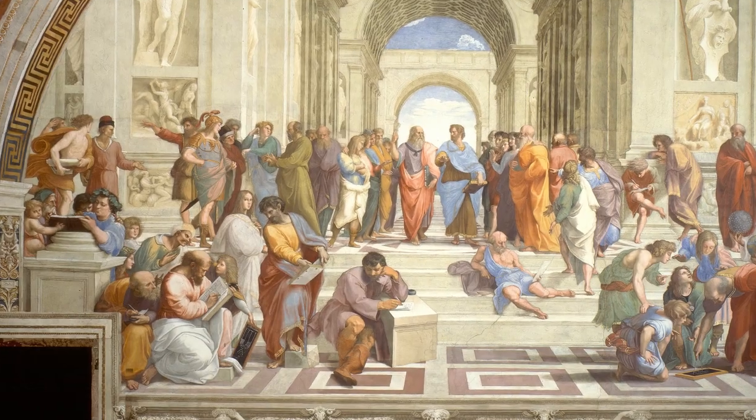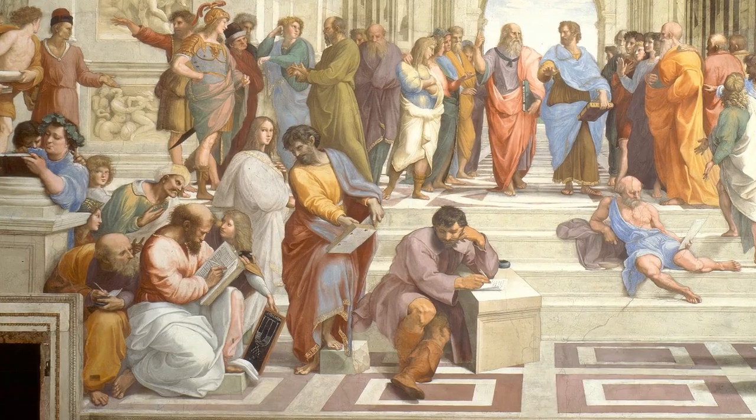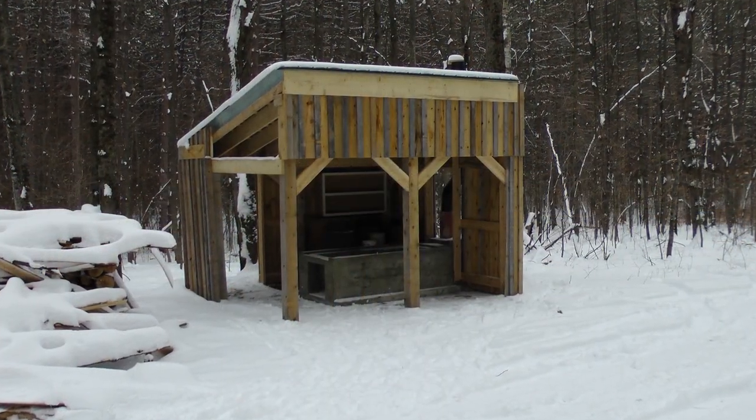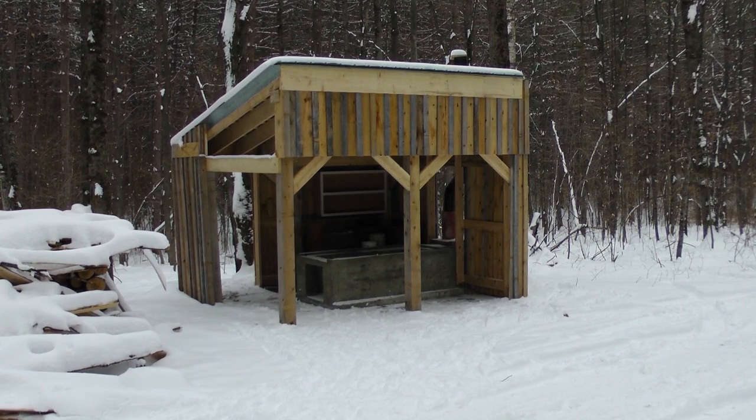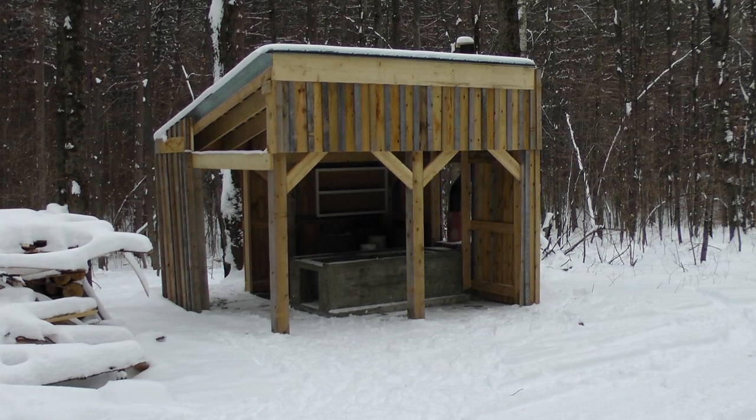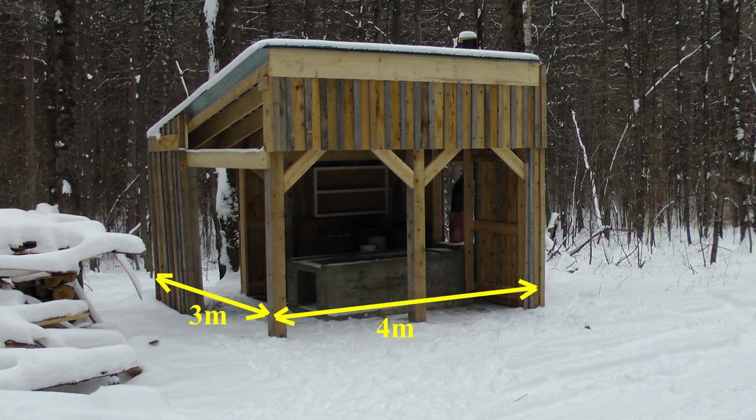Since its inception, the Pythagorean theorem has played a role in architecture, still used today. Here's an example. Suppose you wanted to place some markers to lay out the corners of the foundation of a rectangular building, like this one, a rustic shelter for making maple syrup.